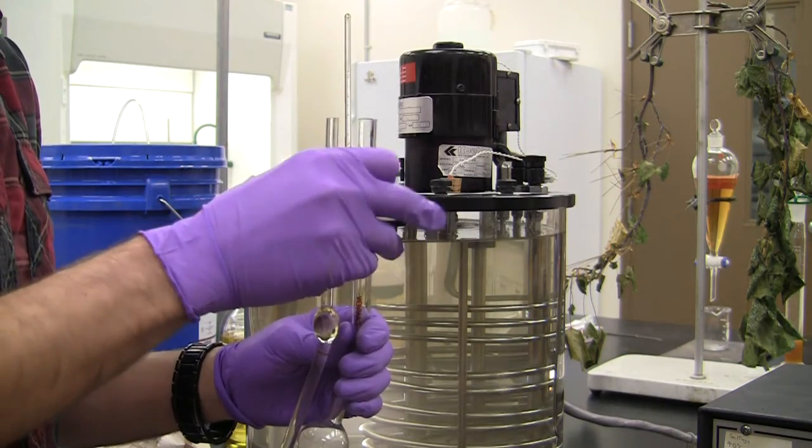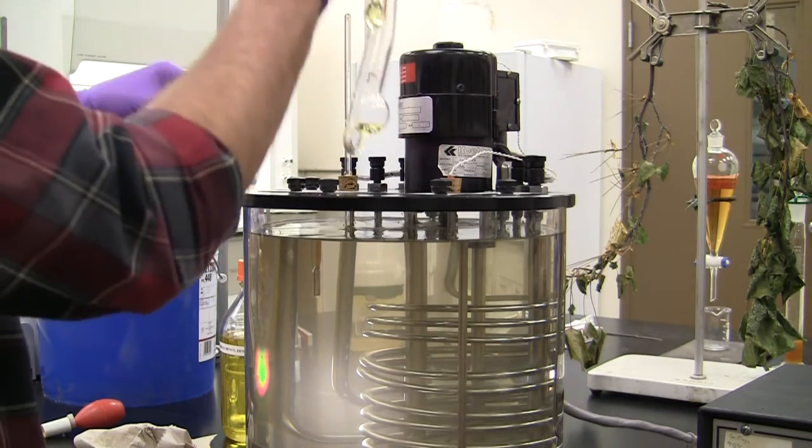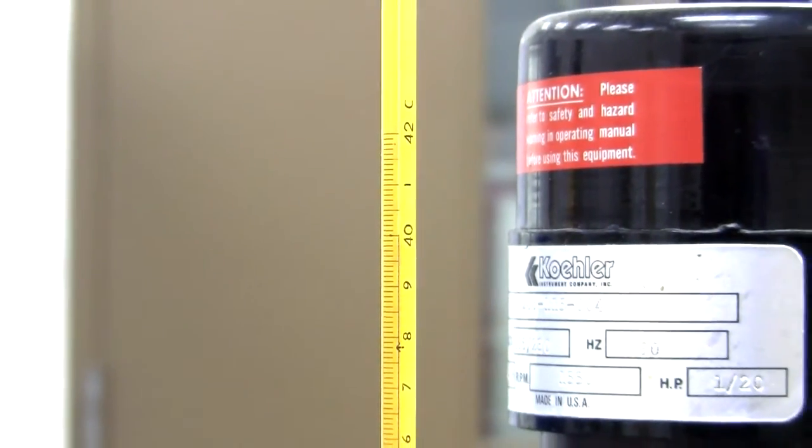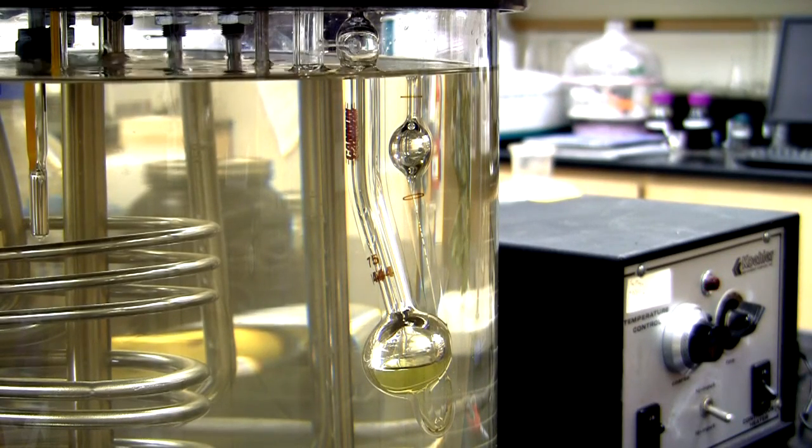Place the viscometer into the holder and insert it into the constant temperature bath, ensuring that it's aligned vertically. Allow approximately 10 minutes for the sample to come to the bath temperature at 40 degrees C and 15 minutes at 100 degrees C.